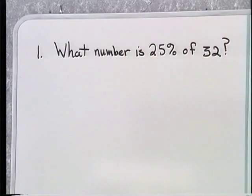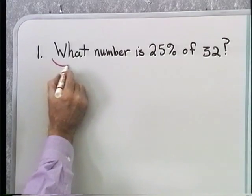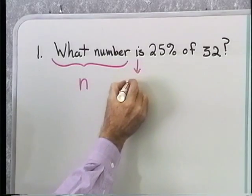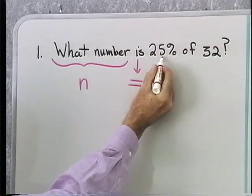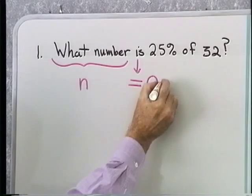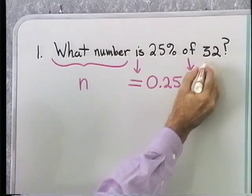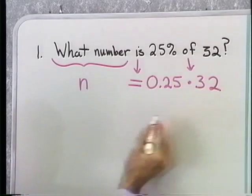Let's look at the first one. What number is 25% of 32? So we translate. What number translates into n, is translates into equal, 25% as a decimal is 0.25, of is multiply and then 32.